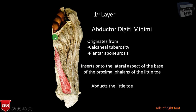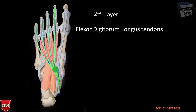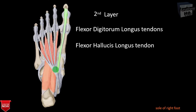The second layer consists mainly of the long flexor tendons and intrinsic muscles: the lumbrical muscles and the flexor accessorius. Here you can see the flexor digitorum longus tendon in green, along with the flexor hallucis longus.